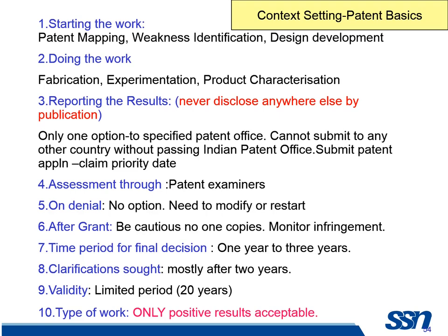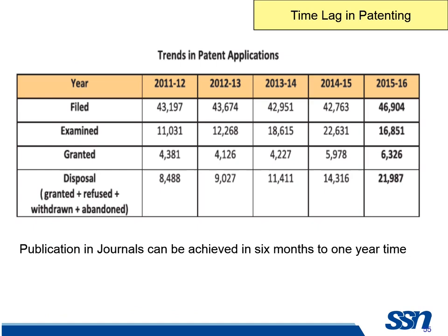These are the major difficulties in patents compared to research. Research is quick — we can communicate to somebody, if denied we can go to other channels, it is eternally valid, and you can have your H-index increasing. Whereas in patents, you have to wait three years for a result, queries come after two or three years which you may not remember, and only positive products are possible to patent because of the utility criteria.